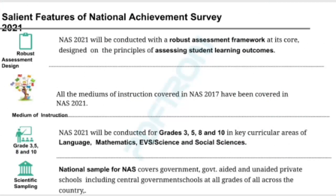NAS 2021 will be conducted with a robust assessment framework at its core, designed on the principles of assessing student learning outcomes. All the mediums of instruction covered in NAS 2017 have been covered in NAS 2021. NAS 2021 will be conducted for grades 3, 5, 8, and 10th in key curricular areas of Language, Mathematics, EVS or Science, and Social Sciences. The national sample for NAS covers government-aided and unaided private schools including central government schools at all grades across the country.